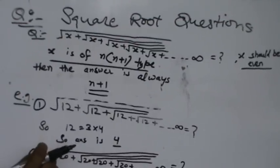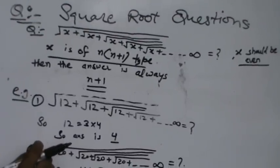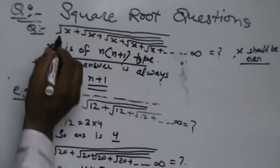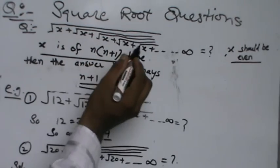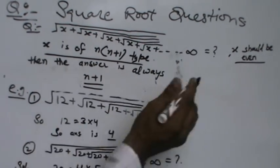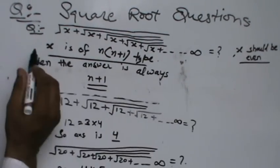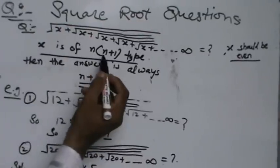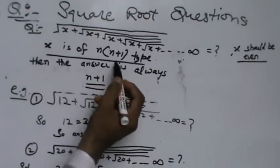Hello friends, we are going to solve this square root problem. Suppose in any mathematics question, we are given questions like n root x plus n root x plus n root x up to infinity, in which x is always even. Then the answer should be where x is divided into the form n into n plus 1.